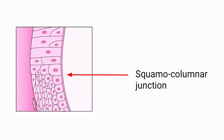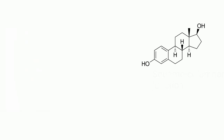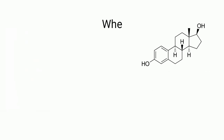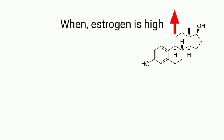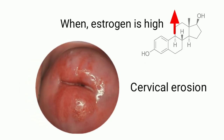The squamo-columnar junction is not static. It moves inwards and outwards depending upon the level of estrogen. When the estrogen level is high, the junction moves out, resulting in cervical erosion.